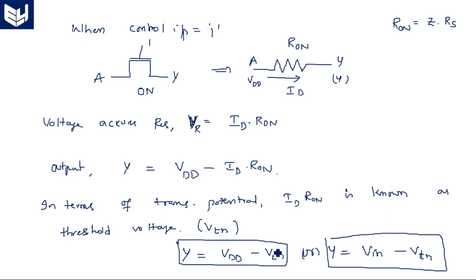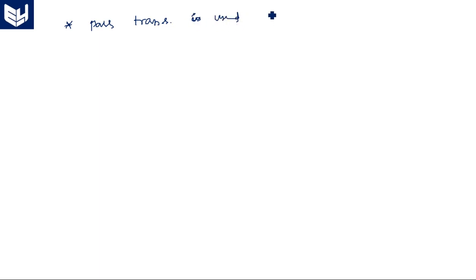So we can write Y = VDD − VTN, or in general terms Y = V_input − VTN. If input equals VDD then Y = VDD − VTN; if input equals 0 then Y = −VTN. This is the complete internal analysis of pass transistor logic.